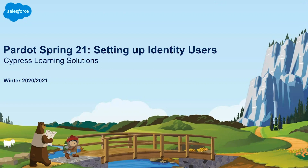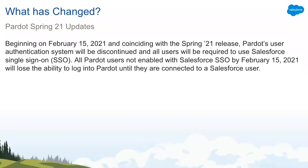Before jumping in, let's quickly go over what's changing and how it will affect your Pardot users. Beginning on February 15, 2021, and coinciding with the Spring 21 release, Pardot's user authentication system will be discontinued, and all users will be required to use a Salesforce single sign-on.